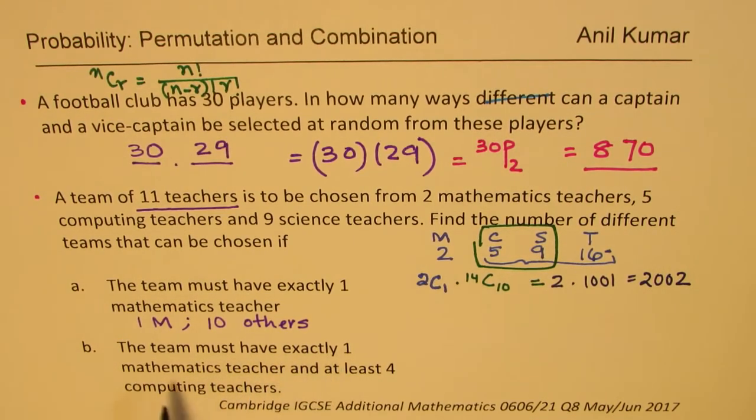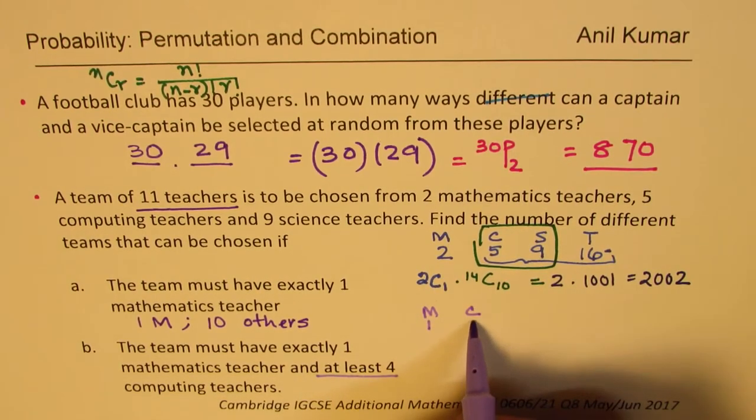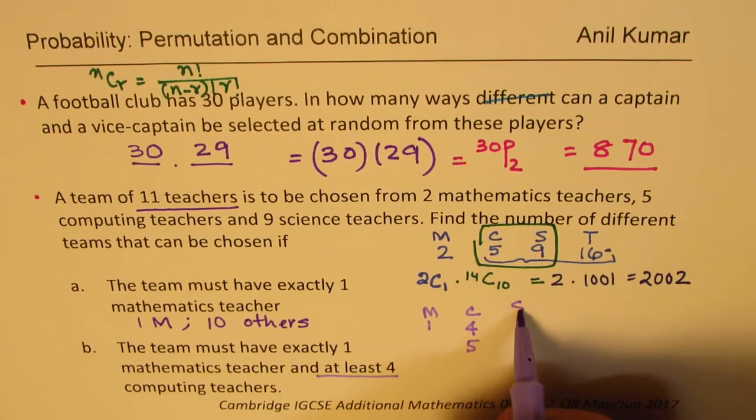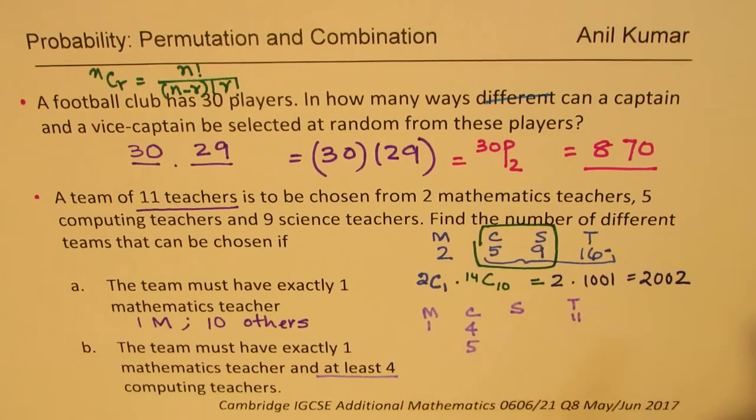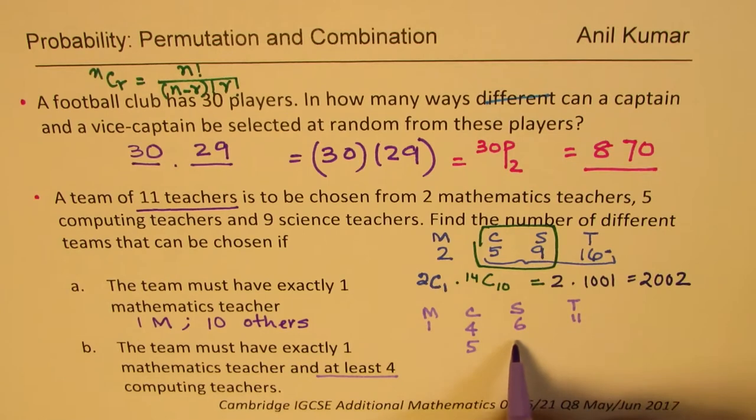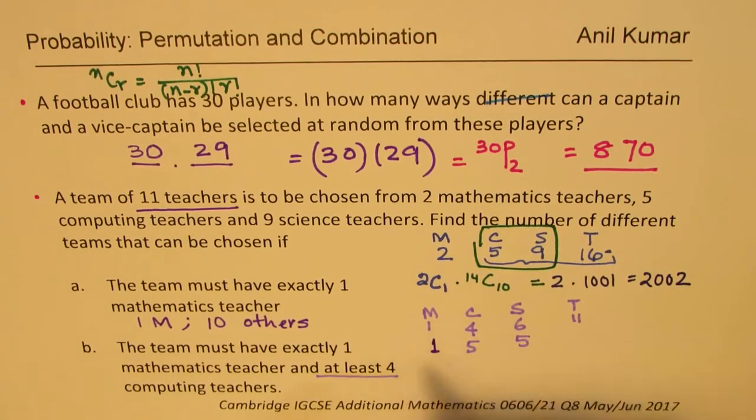Now let's look into part b, which is the team must have exactly one mathematics teacher and at least 4 computing teachers. Now the critical word to understand here is at least 4. This is where sometimes you can do a mistake. At least 4 computing, so what we could have: we could have one mathematics teacher, and as far as the computing teacher, we could have 4, we are total of 5, or 5. In that case, the science teachers will be, we want total of 11 to be selected, so if I choose 4 computing teachers then we are left with 6, and if I choose 5 of these, 1 maths, we are left with 5. So those are the 2 possible combinations.